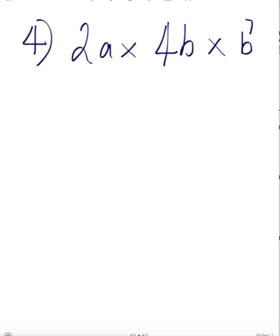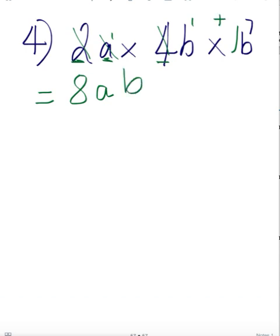This next question involves whole numbers. Multiply the numbers normally: 2 × 4 × 1 = 8. Then work on the bases. There are no other A's, so A stays with its power of 1. For B: B¹ × B⁷ — add the powers, 1 + 7 = 8. So the answer is 8AB⁸. Notice that in these answers, the base variables are always present; the whole numbers change when multiplied.